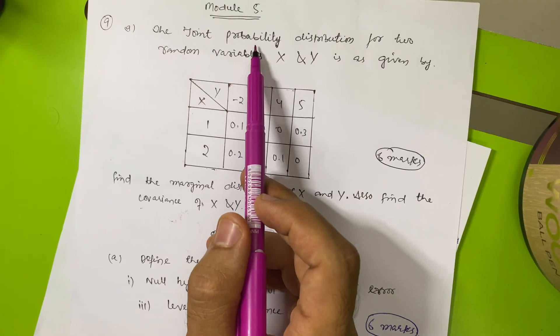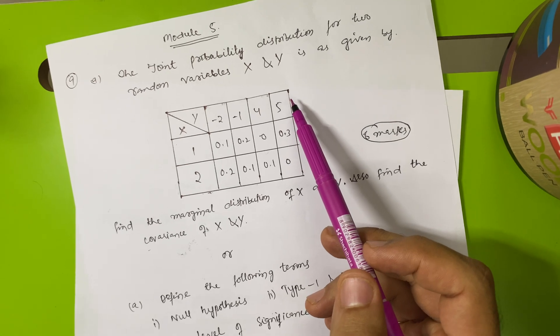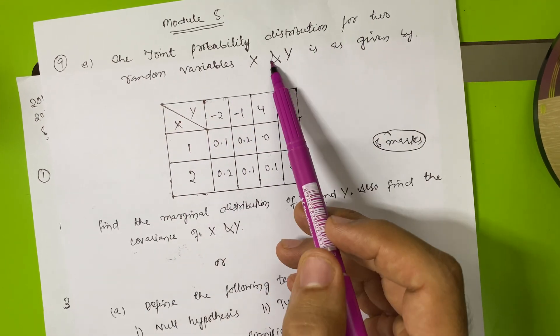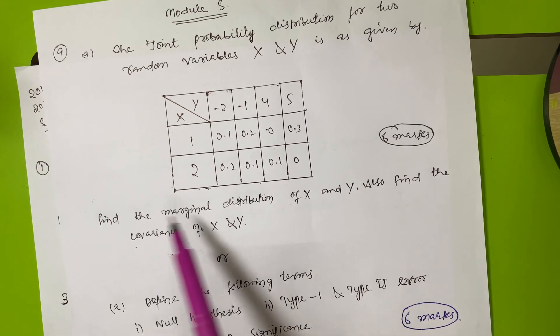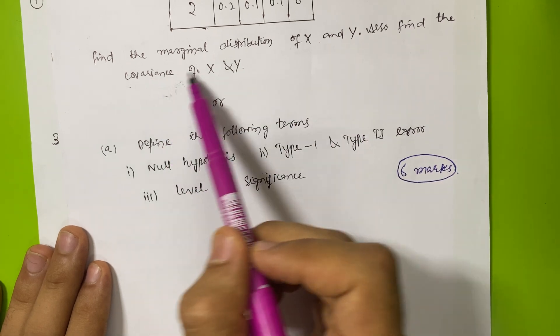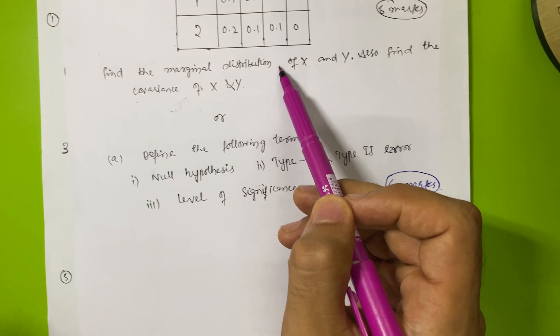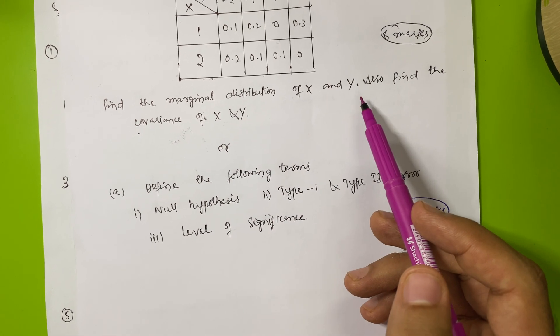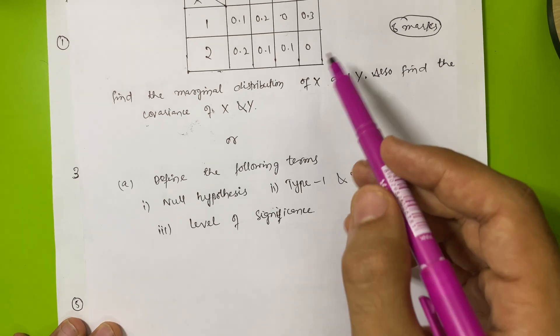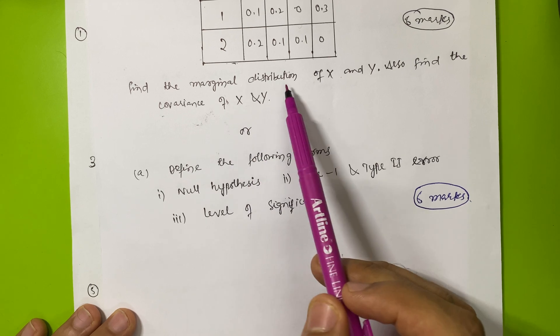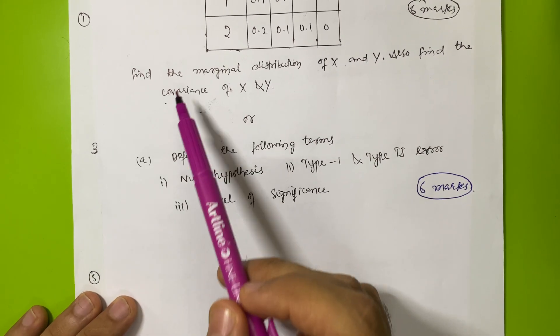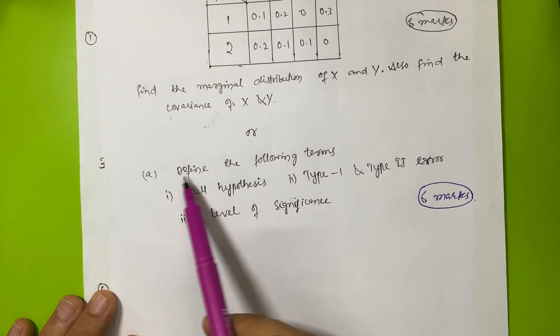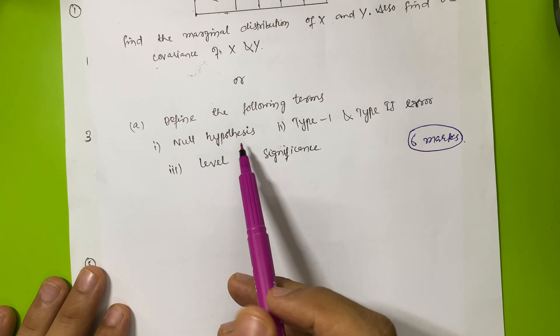Then module fifth. This is the definite question which will be asked. You can refer previous year papers. The joint probability distribution for two random variables X and Y is given, so a table will be given. You have to find marginal distribution of X and Y, also find the covariance of X and Y. They may ask expectation of X, expectation of Y. You have to focus on these concepts: expectation of X, expectation of Y, marginal distribution, covariance, variance.